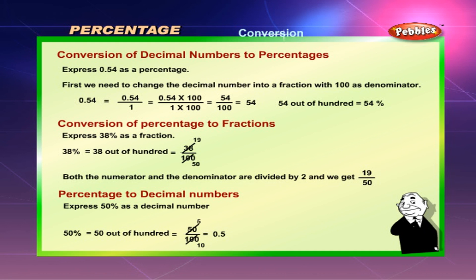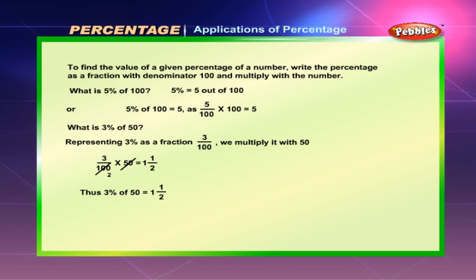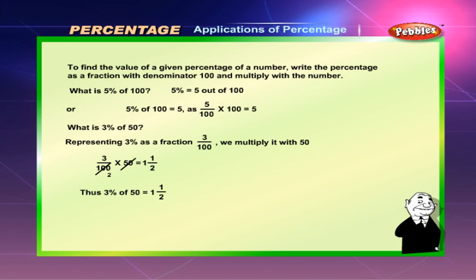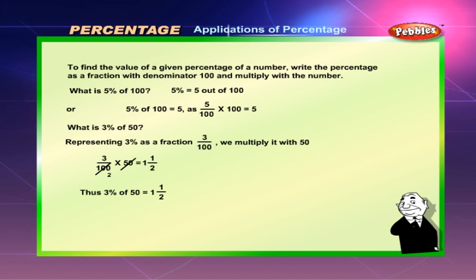To find the value of a given percentage of a number, write the percentage as a fraction with denominator 100 and multiply with the number. What is 5% of 100? 5% is equal to 5 out of 100. So 5% of 100 = 5/100 × 100 = 5.